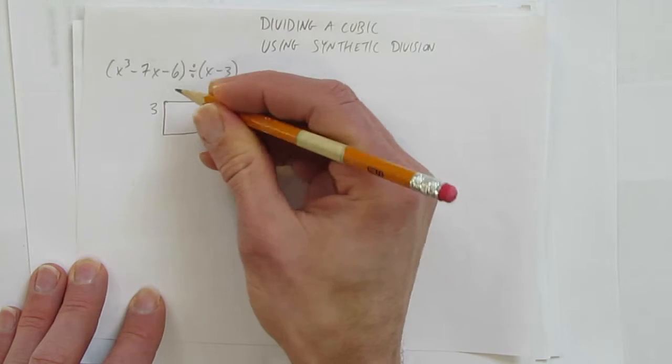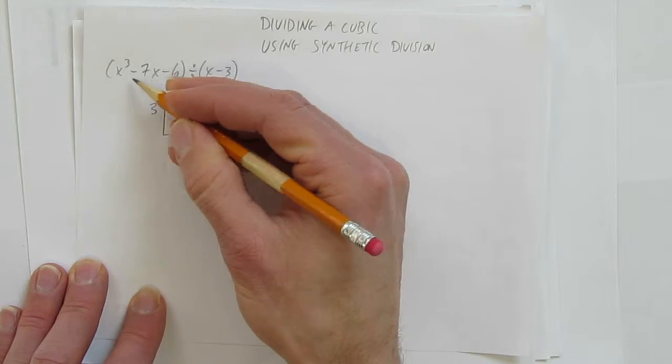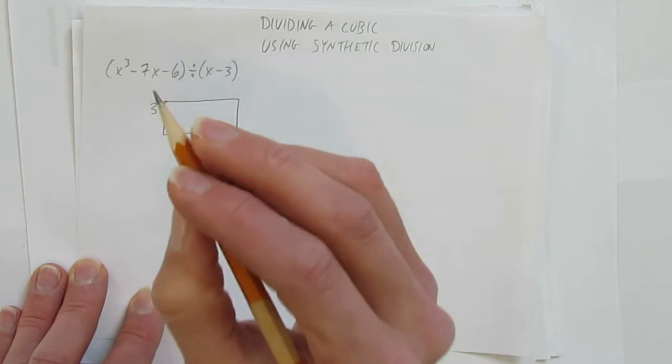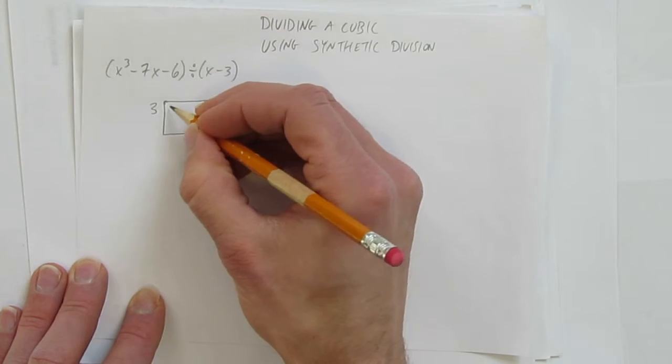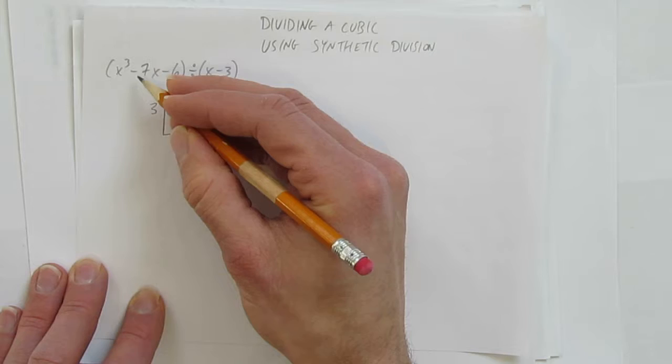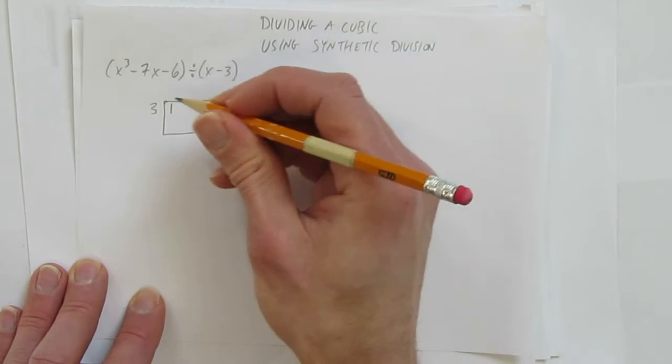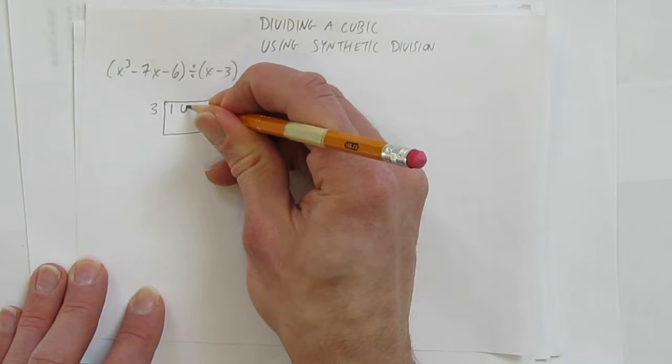The box is made up of the coefficients of the thing we're dividing, the dividend. In this case, x³ - 7x - 6. But be careful, the coefficient here is 1, but you absolutely must put the coefficient of x². What's the coefficient of x²? There are no x²s, so you need a zero here.